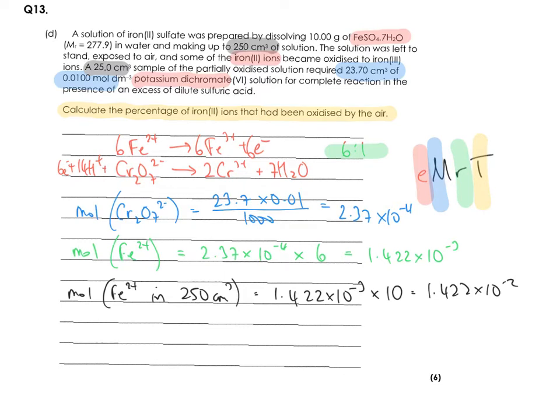So what you're doing, if you read back in the question, it's said that they left the solution to stand exposed to air and some of the iron 2 that was there was oxidized to iron 3. So what you've done is a titration that has oxidized the rest of the iron 2 ions that weren't oxidized. So this number here is the moles of the iron 2 that wasn't oxidized, but you want to work out the amount of iron 2 that was oxidized.